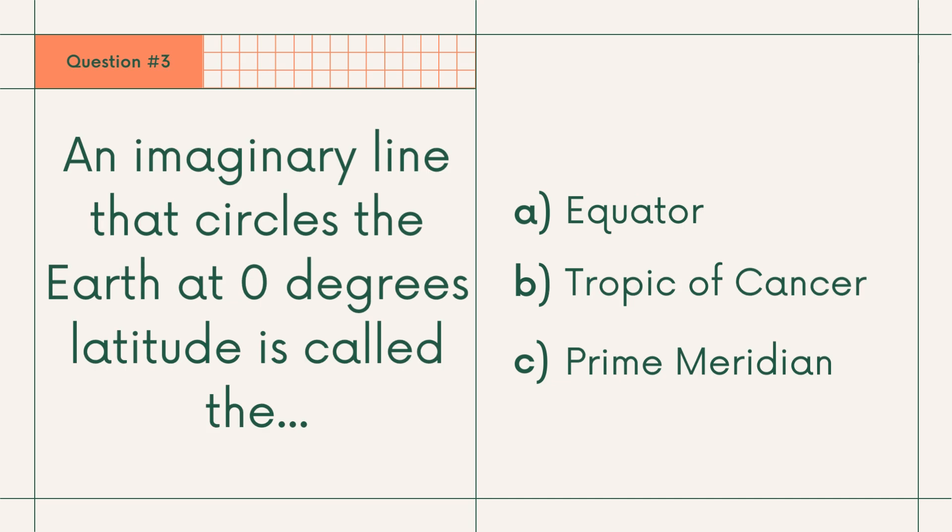Question number 3: An imaginary line that circles the earth at 0 degree latitude is called A. Equator, B. Tropic of Cancer, or C. Prime Meridian. Answer: A. Equator.